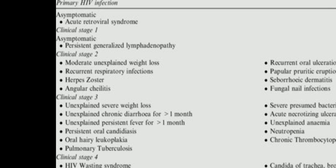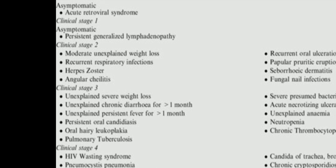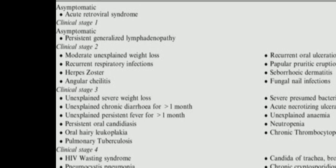Following this stage, you have the symptomatic infection called ARC or AIDS-related complex, where there is unexplained diarrhea and weight loss of more than 10% along with mild opportunistic infections. Then the person progresses to full-blown AIDS.